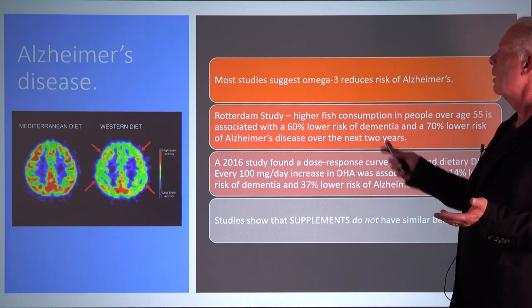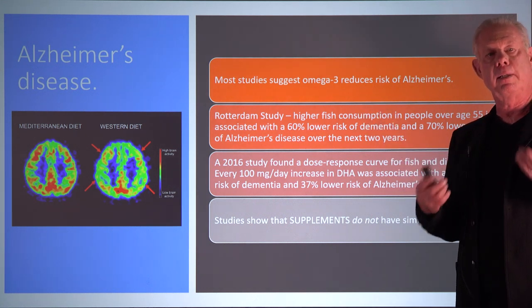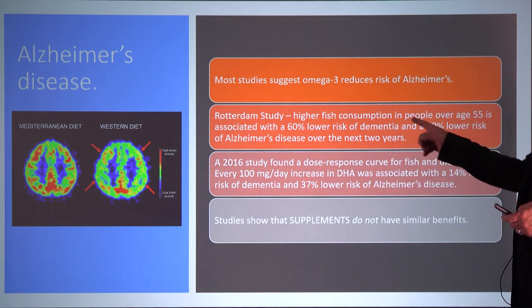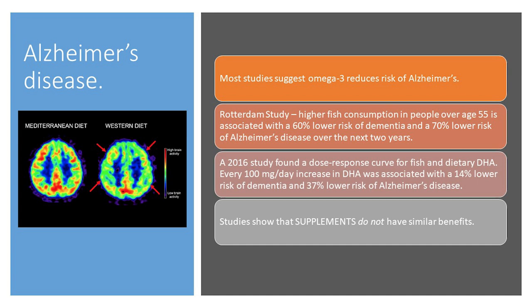Alzheimer's disease — DHA is an important part of the brain. One study showed that the highest DHA levels gave 60% lower risk of dementia and 70% lower risk of Alzheimer's. Another study found a dose-response curve: every 100 mg per day increase in DHA consumption corresponded to 14% lower risk of dementia and 37% lower risk of Alzheimer's disease. And once more, supplements did not show the same effect as eating fish.